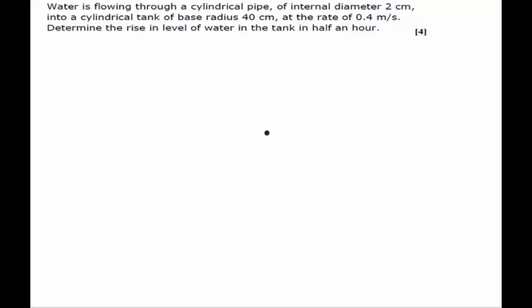Hello students. In this question we are given that water is flowing through a cylindrical pipe of internal diameter 2 cm into a cylindrical tank of base radius 40 cm at the rate of 0.4 meters per second. Determine the rise in level of water in half an hour.